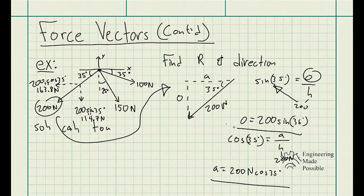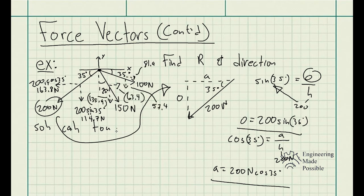We repeat the same process for each vector. For the 150 newton vector — which is 25 degrees with respect to the vertical axis — we split it into X and Y components. The X component is 63.4 newtons and the Y component is 135.9 newtons. For the 100 newton vector, the X component is 81.9 newtons and the Y component is 57.4 newtons.